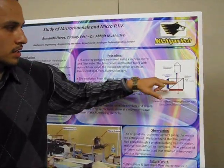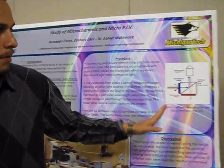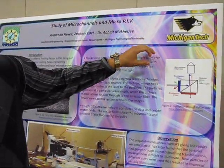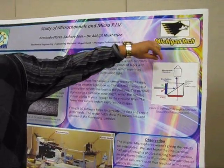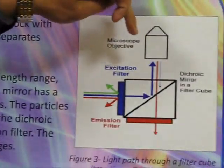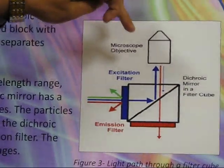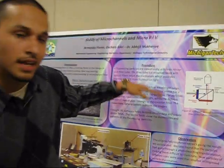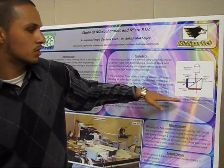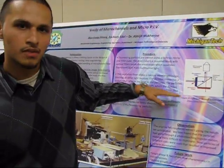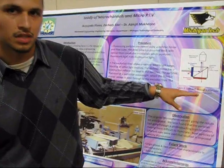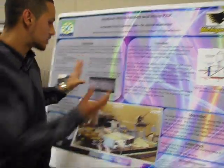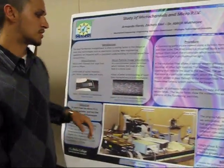The laser comes in at a certain wavelength, bounces off the dichroic mirror, and illuminates the fluorescent particles. The particles come through at a different wavelength, which is allowed to pass through the dichroic mirror and through the emission filter. Below the emission filter we have our high speed cameras which take pictures of the fluorescent particles, giving us these lovely pictures right here.